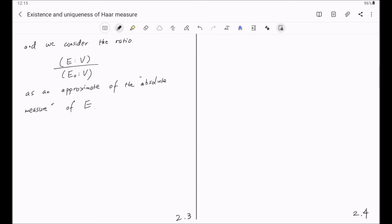Notice that clearly we have the ratio (E:V)/(E0:V) equals (xE:V)/(xE0:V) for any x in G. Namely, the translation by an element in G does not change this ratio.